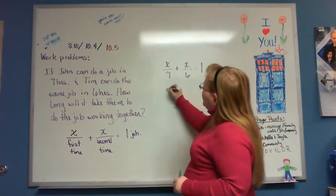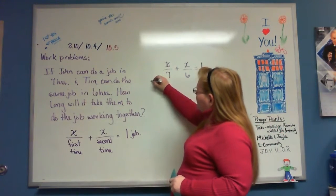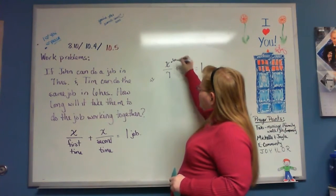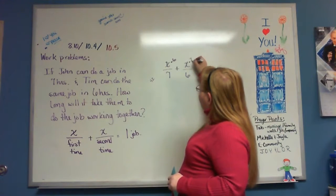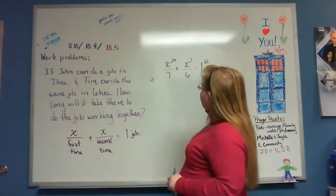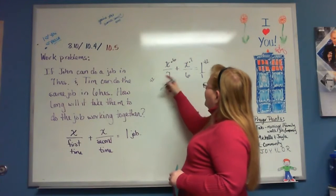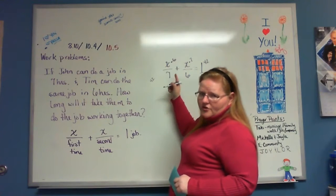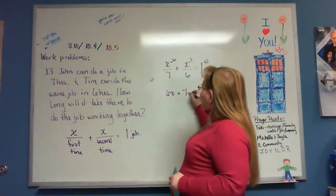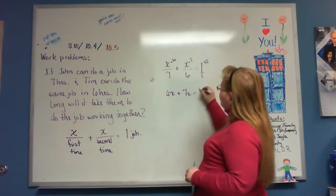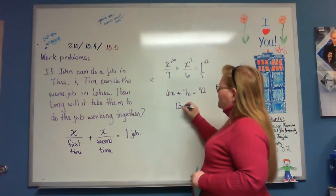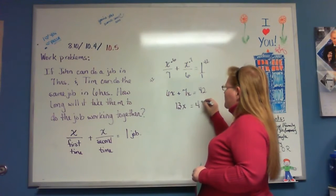The common denominator is 42. I want the bottoms to look like 42, which means the x over 7 gets multiplied by 6 up top, the x over 6 gets multiplied by 7 up top, and the 1 gets multiplied by 42. I don't have to write the bottoms anymore — I can just stick with the tops. So that's 6x plus 7x equals 42.